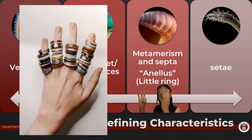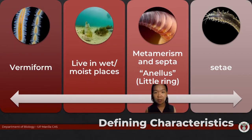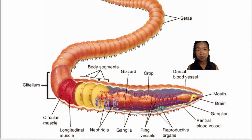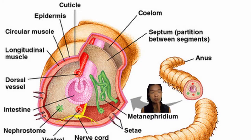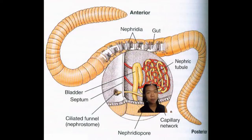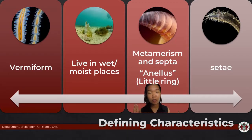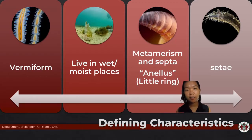They're called Annelida from the name 'annellus' because they kind of look like small rings stuck together. They exhibit what we call metamerism — true metamerism this time — meaning their body is actually divided into segments. These segments cannot function independently; they have to be together. The segments are divided internally by septa, kind of like rooms inside that repeat the respiratory, excretory, and locomotory organs in each segment.